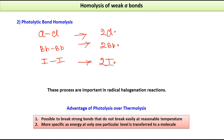Photolysis has advantages over thermolysis. It can break even strong bonds that do not break easily at reasonable temperatures. Photolysis is also more specific, because energy at only one particular level is transferred to a molecule depending on the frequency of light used, unlike the less selective energy input of thermolysis.